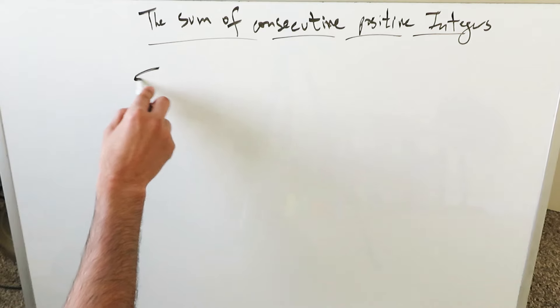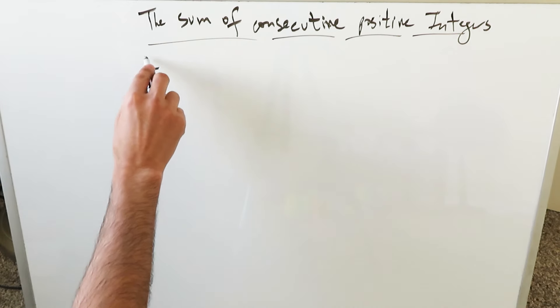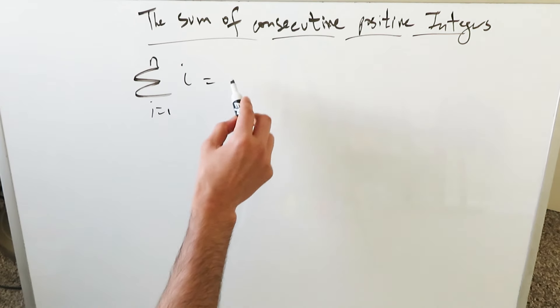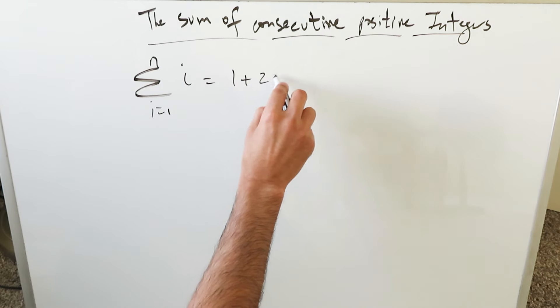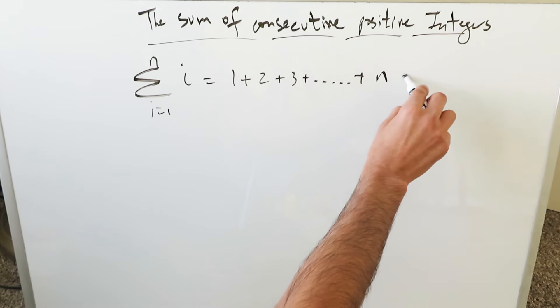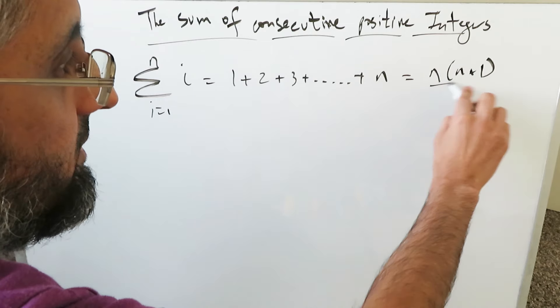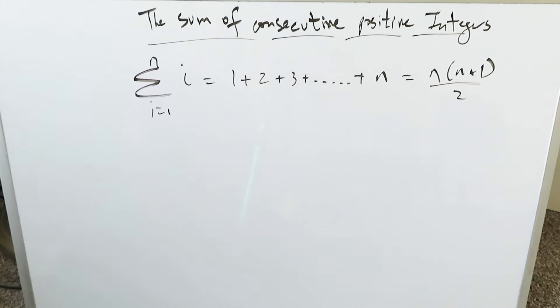Look at this representation, sigma representation: i equals 1 up to n. It can be represented as 1 plus 2 plus 3 plus all the way up to a certain value n. And this right here equals this specific formula: n times n plus 1 over 2.